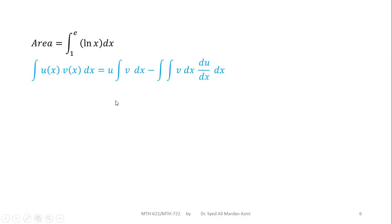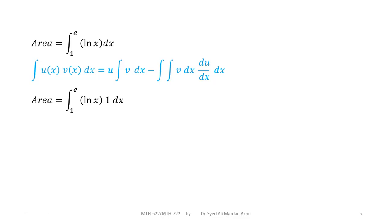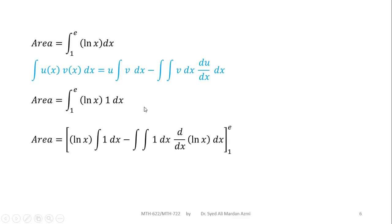Note that we don't have a direct formula for the integration of natural log of x, so we will use integration by parts with 1 as a multiplier. In the integration by parts formula we have two functions: we take u as the function whose derivative is possible and v as the function whose integration is possible. So we take u of x equal to natural log of x and v equal to 1.